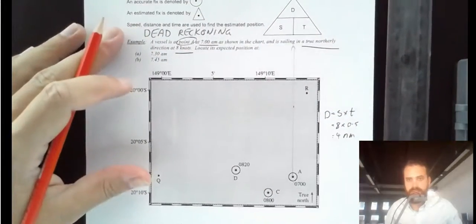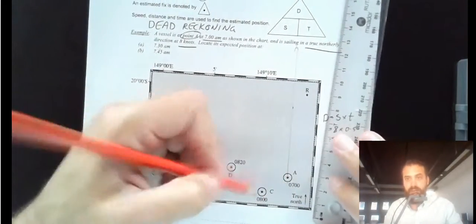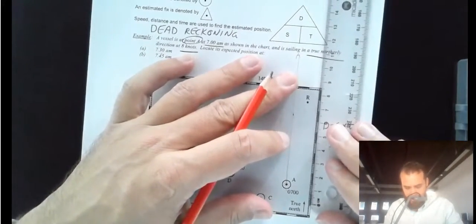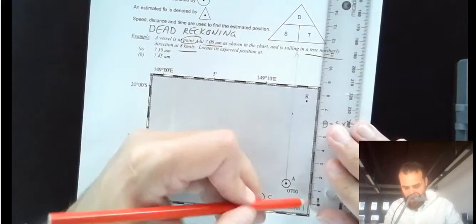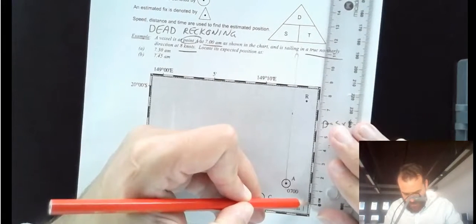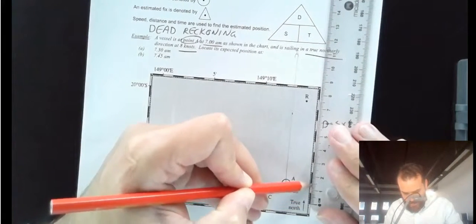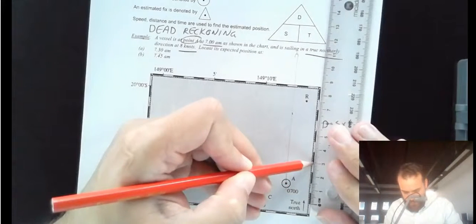Now in order to figure out where that spot is, we just take our ruler and we measure up here. 1, 2, 3, 4. Now it looks like on this particular map that 4 nautical miles is equal to 3 centimeters.